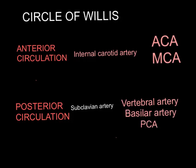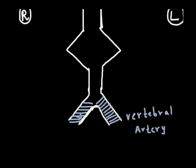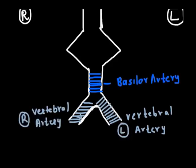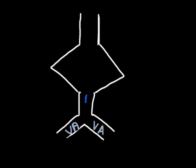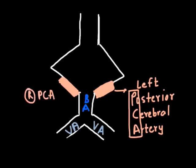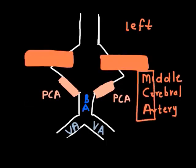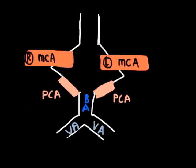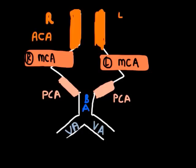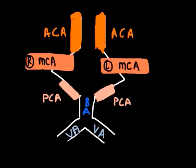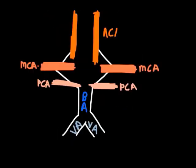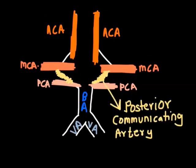In the same lecture we had seen an easy way to draw the Circle of Willis — the anterior, middle and posterior cerebral arteries with the communicating arteries, and a single basilar and two vertebral arteries.